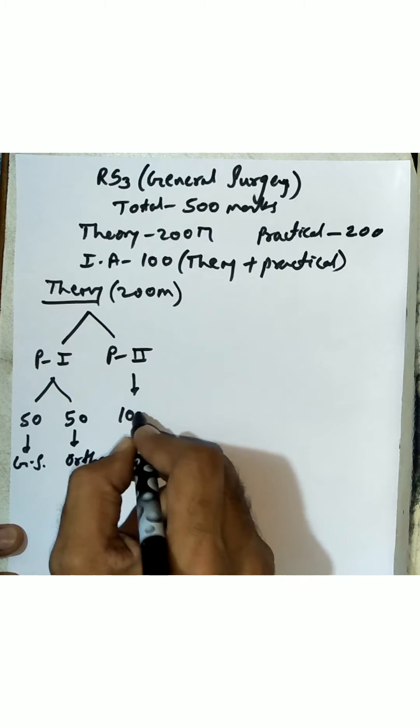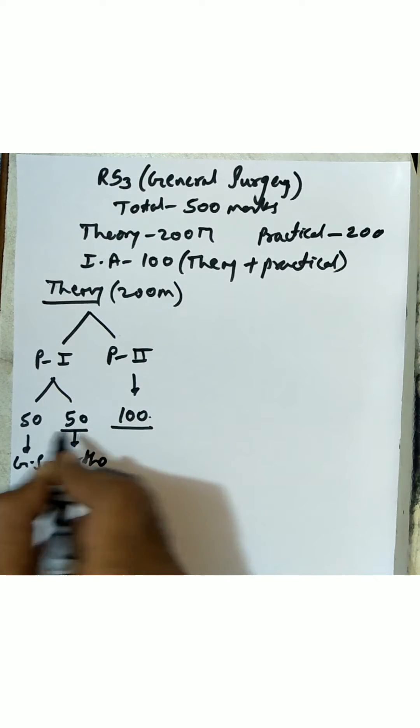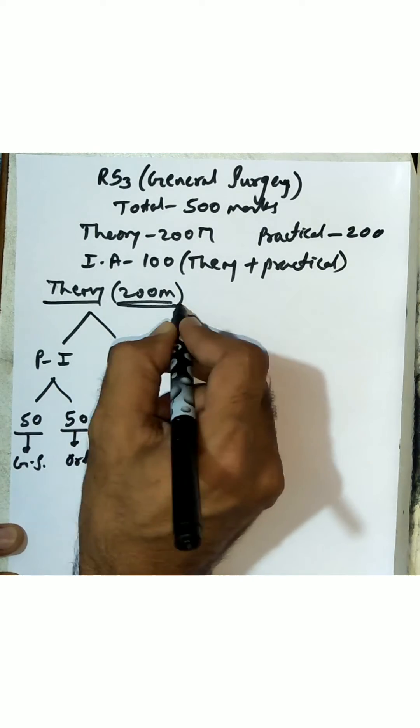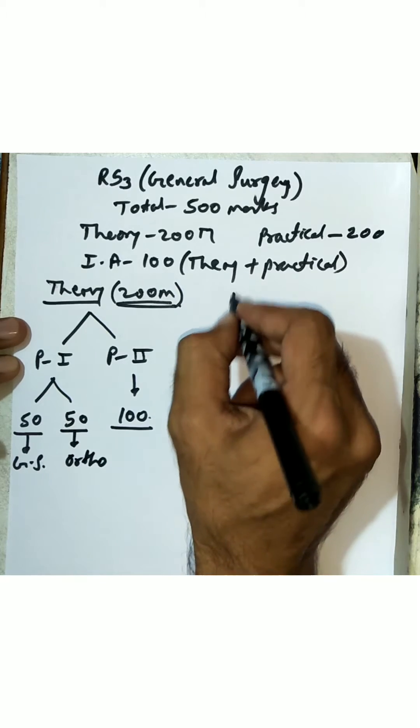In paper 2, it's a total of 100 marks continuously for 3 hours. So you have 100 plus 100 constituting 200 total theory marks.